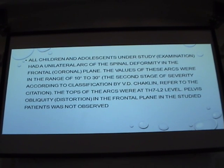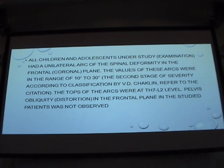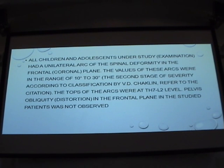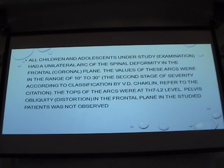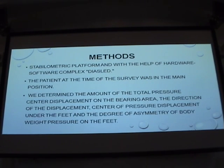Children in the study had a unilateral arc of spinal deformity in the frontal plane with a range of 30 degrees, per the classification used. The apex of the arcs was at the TH7-L2 level, and there was pelvis distortion from the frontal plane.